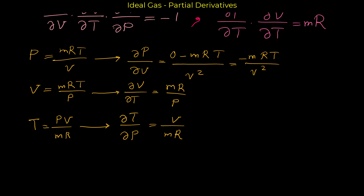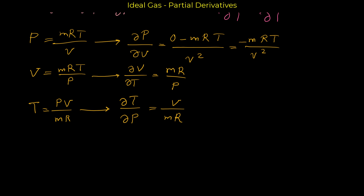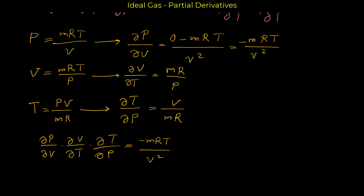Now we multiply all of these answers by each other, and the result should equal negative one. So: partial derivative of p with respect to v, times partial derivative of v with respect to t, times partial derivative of t with respect to p. For the first one we have negative mRT over v squared; for the next one we have mR over p; and finally v over mR. Let's simplify the common terms — the R's cancel, one v from the denominator cancels with one v from the numerator, and the m's cancel.